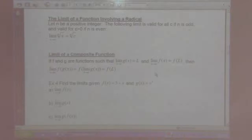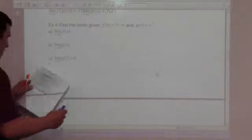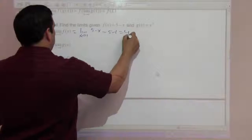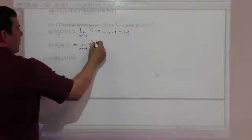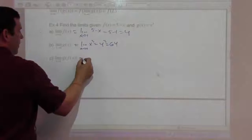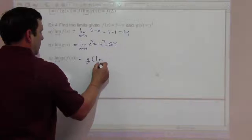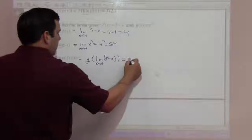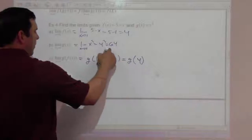Find the limits given that f of x equals 5 minus x and g of x equals x cubed. The limit as x goes to 1 of f of x — that's 5 minus 1, which is 4. The limit as x goes to 4 of g of x — that's 4 cubed, which is 64. And the limit as x goes to 1 of g of f of x equals g of the limit as x goes to 1 of f of x, which is g of 4, and we found that equals 64.